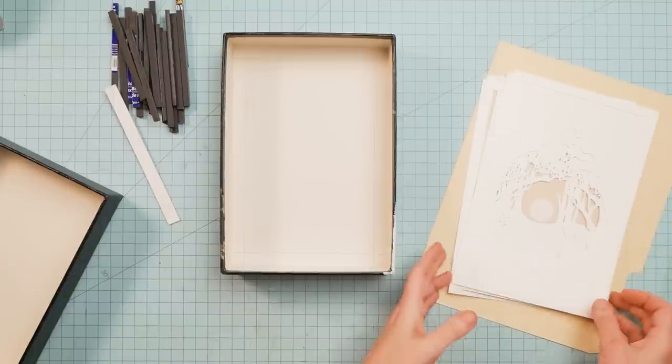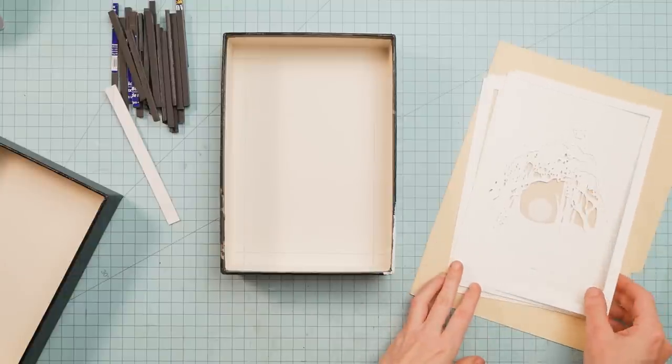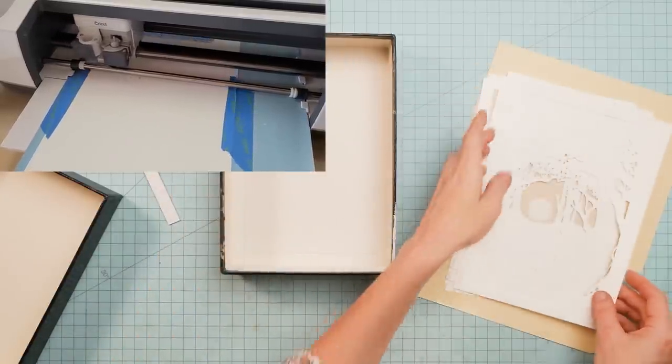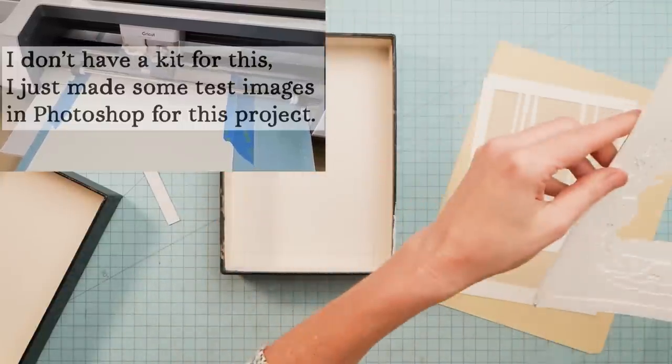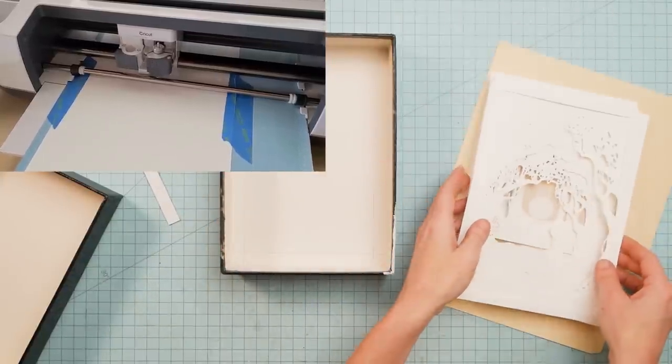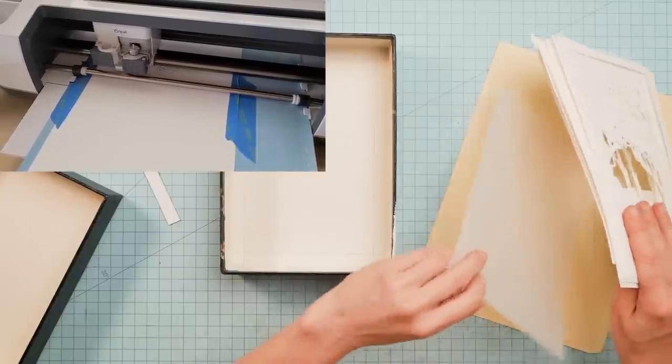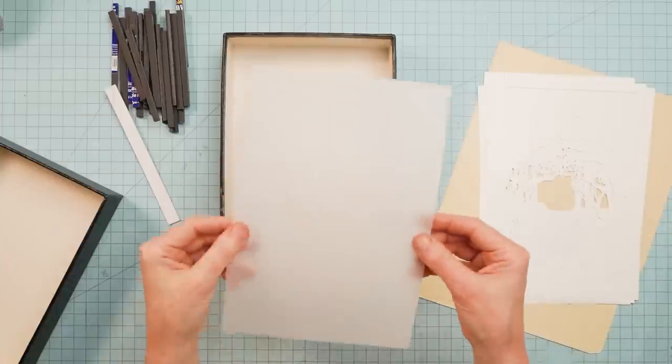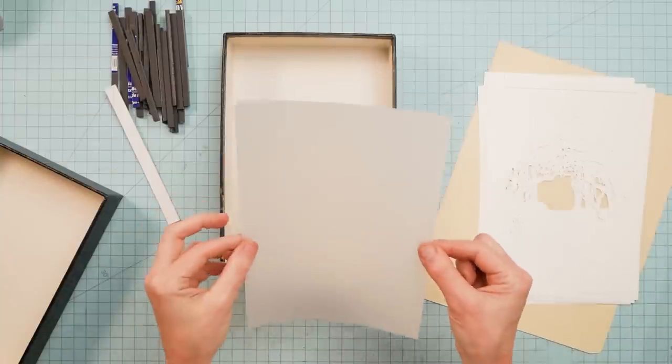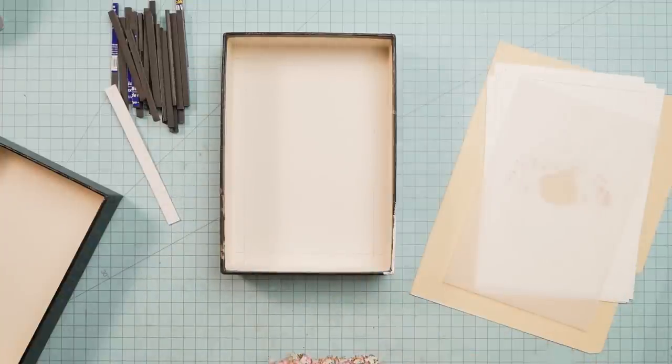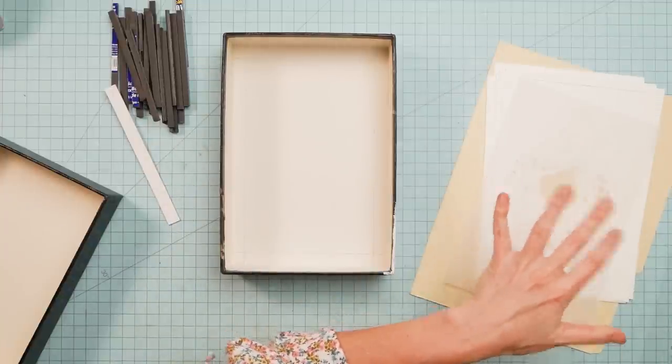And then I had my Cricut cut out all the paper layers that I created, so we'll be able to layer them up with the foam core slices in between them. And then in the very back there is a piece of vellum so that when I put the lights in the back, you won't be able to see each individual light.